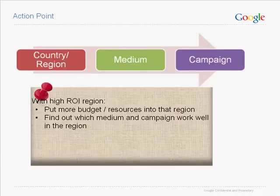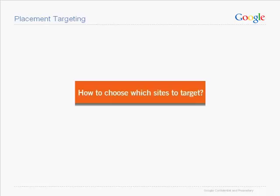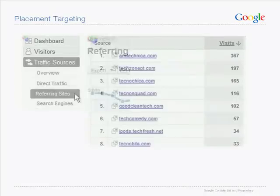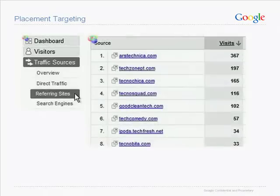To sum up: for regions with higher ROI, put more budget or resources there and find out which medium and campaign work well in that region. Next, let's talk about placement targeting.